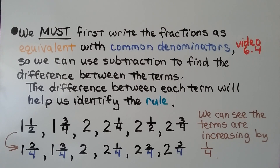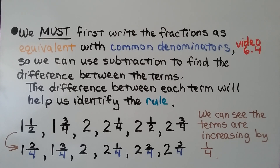We must first write the fractions as equivalent with common denominators — we learned about equivalent fractions and common denominators in 6.4. So we can use subtraction to find the difference between the terms, and the difference between each term will help us identify the rule.